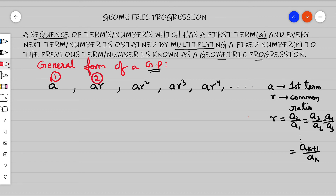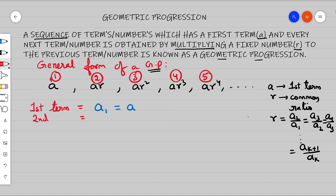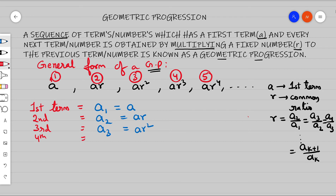Observing the sequence: 'a' is the first term, 'ar' is the second term, 'ar²' is the third term, 'ar³' is the fourth term, and 'ar⁴' is the fifth term. Let us write this in an organized way using subscript notation — a₁ = a, a₂ = ar, a₃ = ar², a₄ = ar³ — and try to find the nth term of a geometric progression.